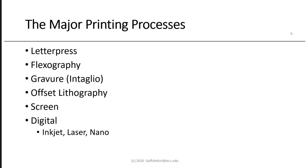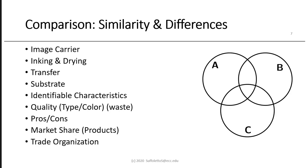The major printing processes are: letterpress; flexography, sometimes called flexo; gravure, often called rotogravure because it's mostly a web roll-fed process — a special form of gravure is called intaglio; offset lithography, which is the most popular; screen printing; and the new technology, digital, which includes inkjet, laser, and nano.